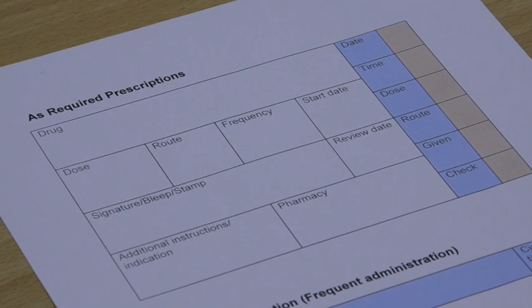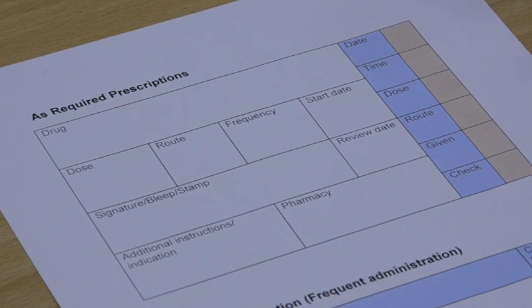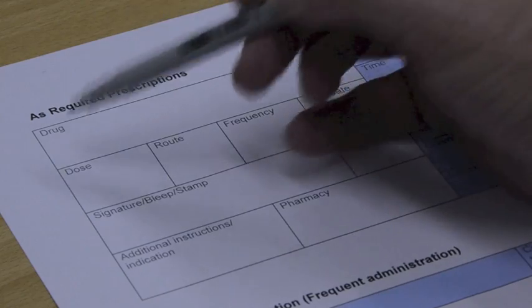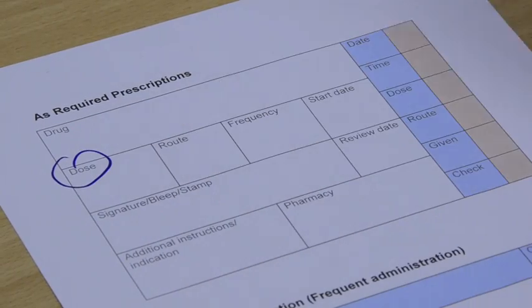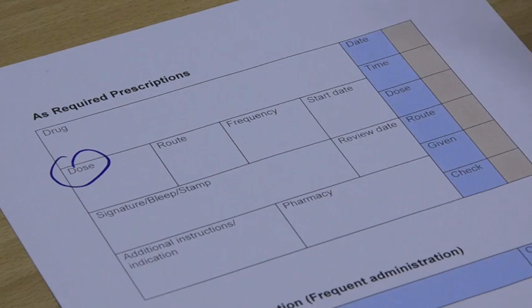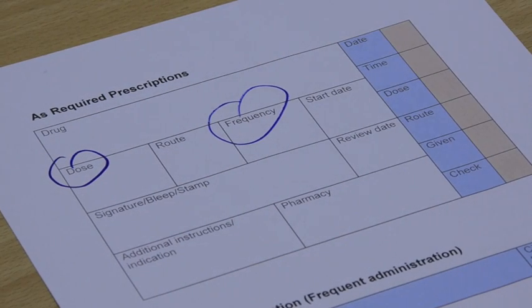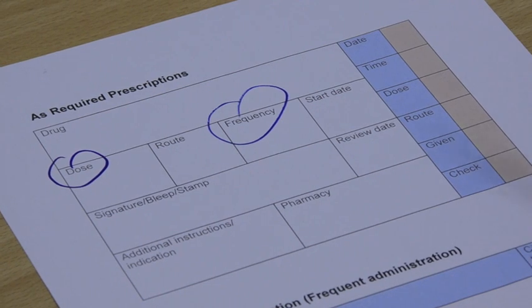And they look like this. There are two basic types here. There's the as required prescriptions, and all we're really looking for is the actual dose, which will be recorded there, not particularly the route, although that's all part of it, and sometimes the frequency. But for a single dose, you don't normally need that.